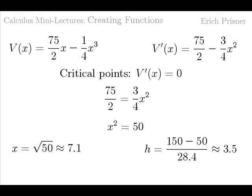For the height, we get h equals 150 minus 50 over 28.4, which is about 3.5. And for the volume, V of 7.1 equals about 176.8.